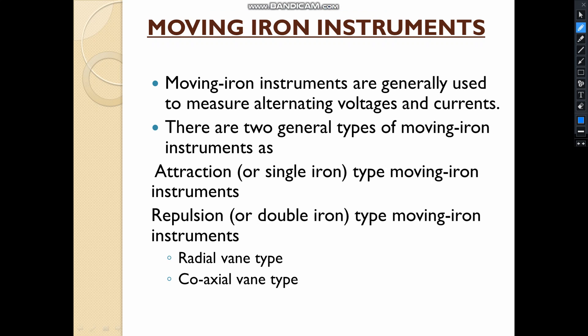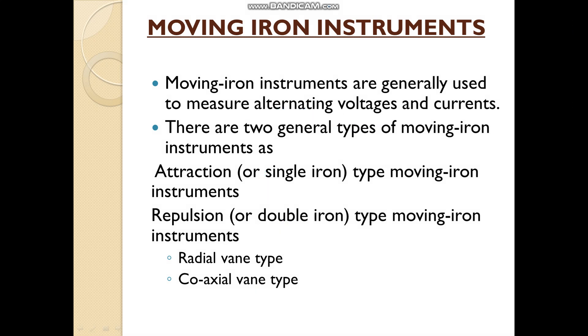Moving on to the next type: the moving iron instrument. Moving iron instruments can measure both voltages and currents, like the moving coil instrument. There are two types of moving iron: attraction type and repulsion type. Under the repulsion type, there is a further classification into radial vane and coaxial vane. A vane is essentially a plate.